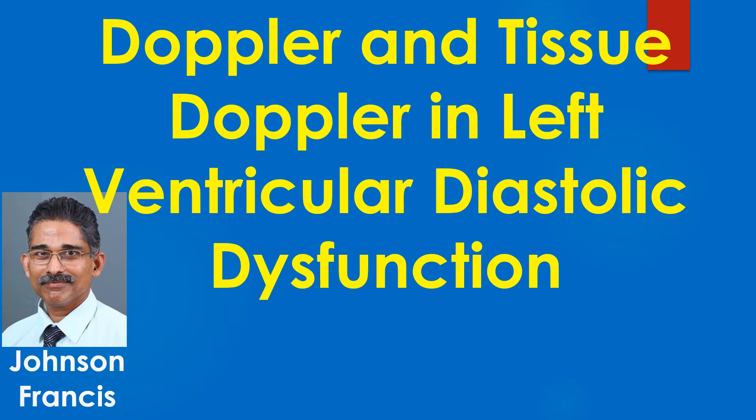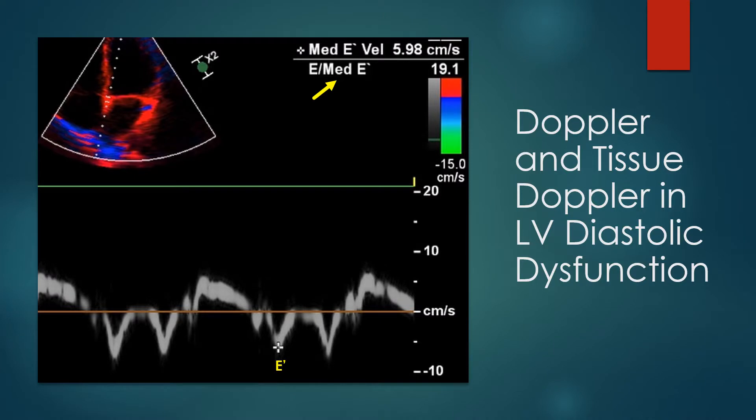Doppler and tissue Doppler in left ventricular diastolic dysfunction. This is a tissue Doppler image with colour kinesis in the inset. E by A prime of the medial mitral annulus is shown as 19.1, indicating left ventricular diastolic dysfunction.